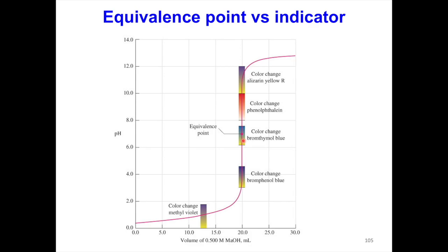The end point pH range lies on the steep or vertical part of the titration curve. So other than bromothymol blue, we can also use phenolphthalein. However, methyl violet is not a suitable indicator because its pH range is not within the end point pH range.